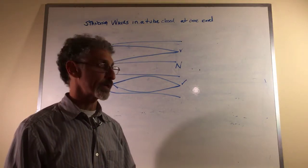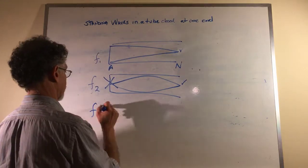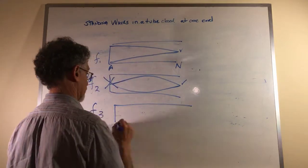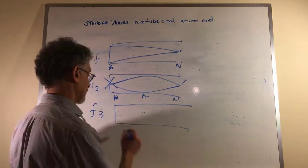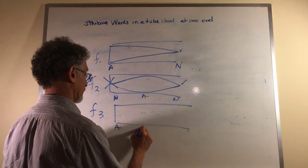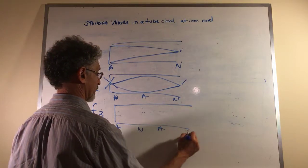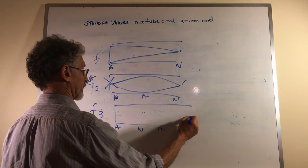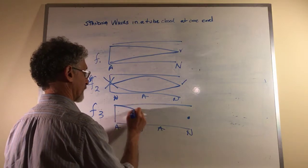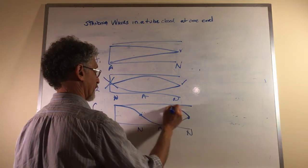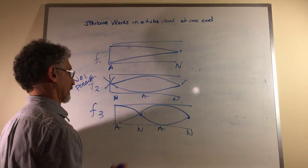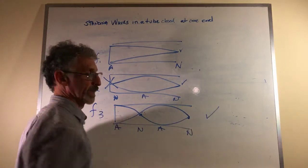Let's go on to the third harmonic. Let's have anti-node, node, anti-node, node, node here, node here. And this is fine.